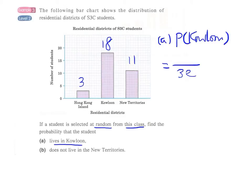And there are 18 students living in the Kowloon side, so this will be our number of favorable outcomes, and this is our total number of possible outcomes.